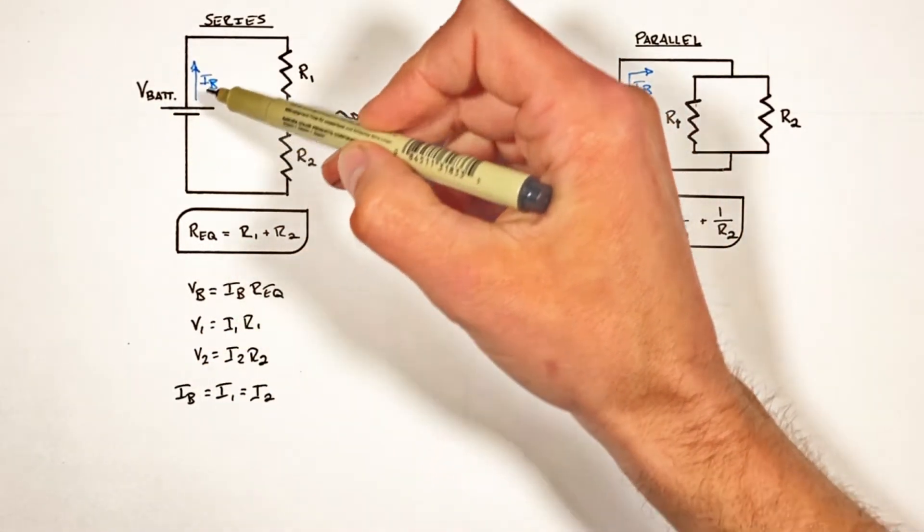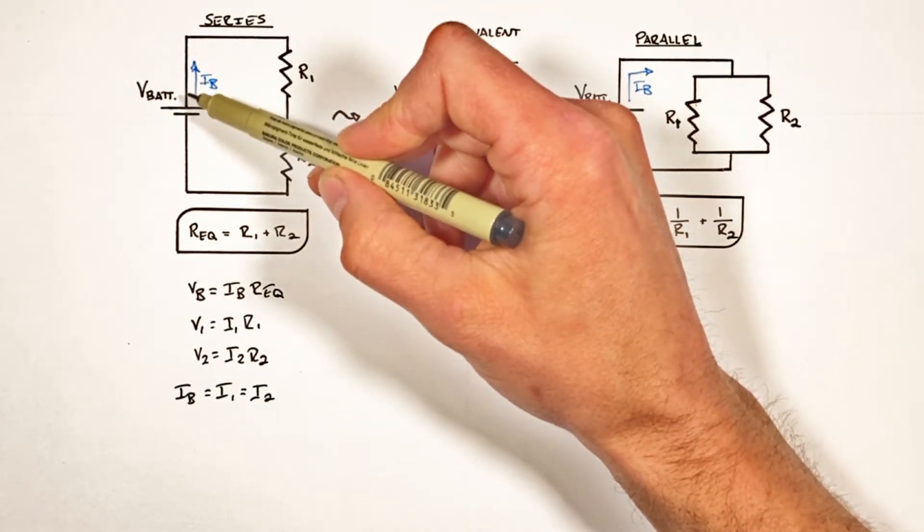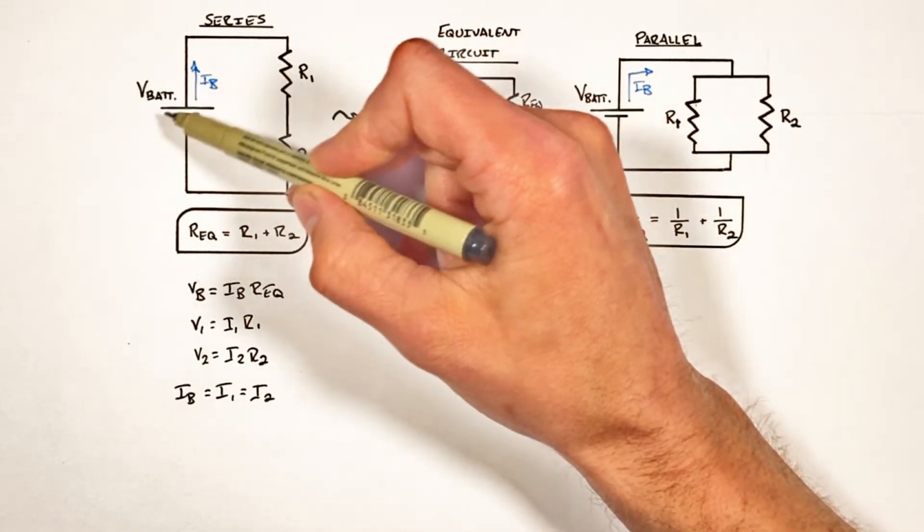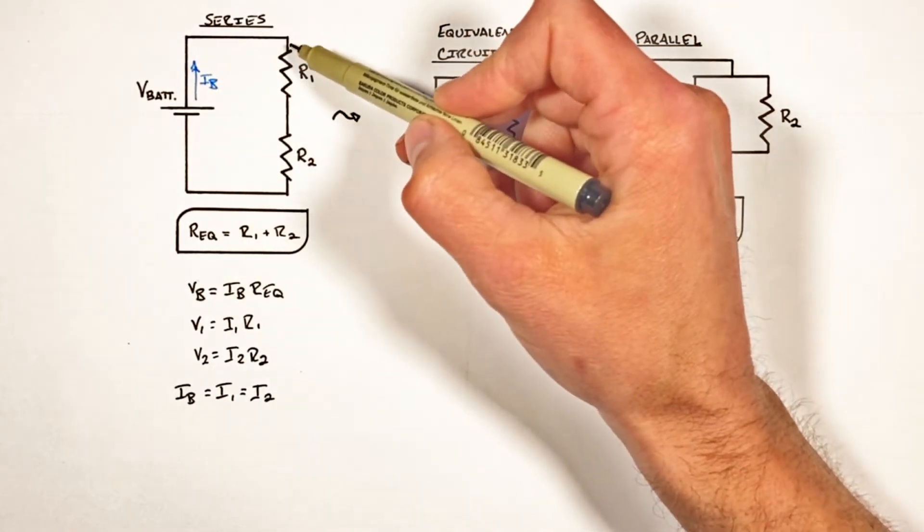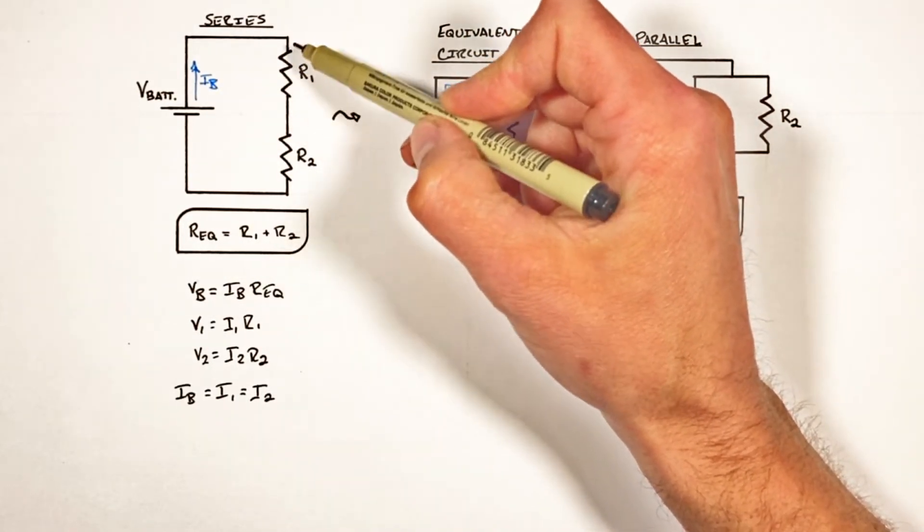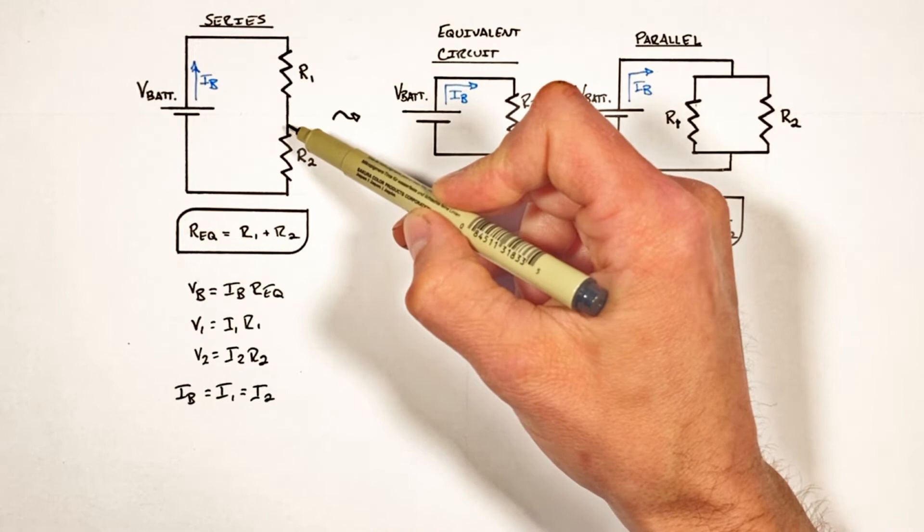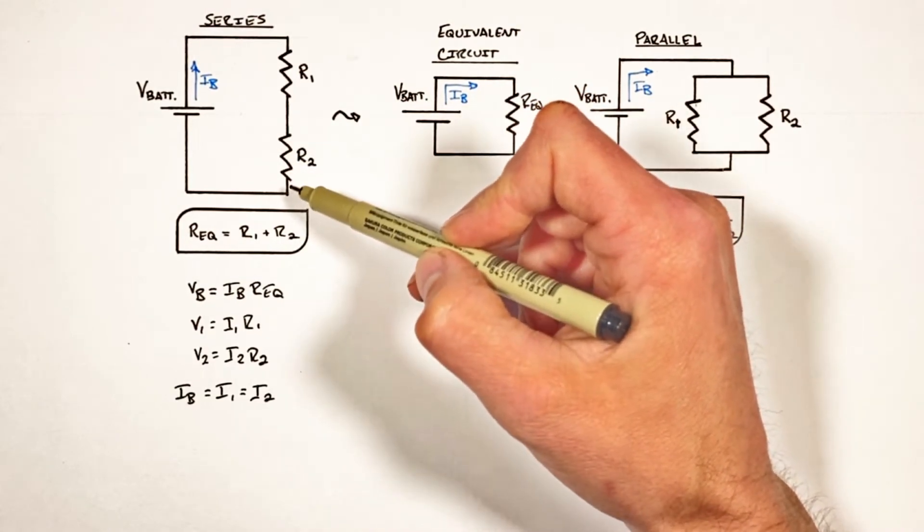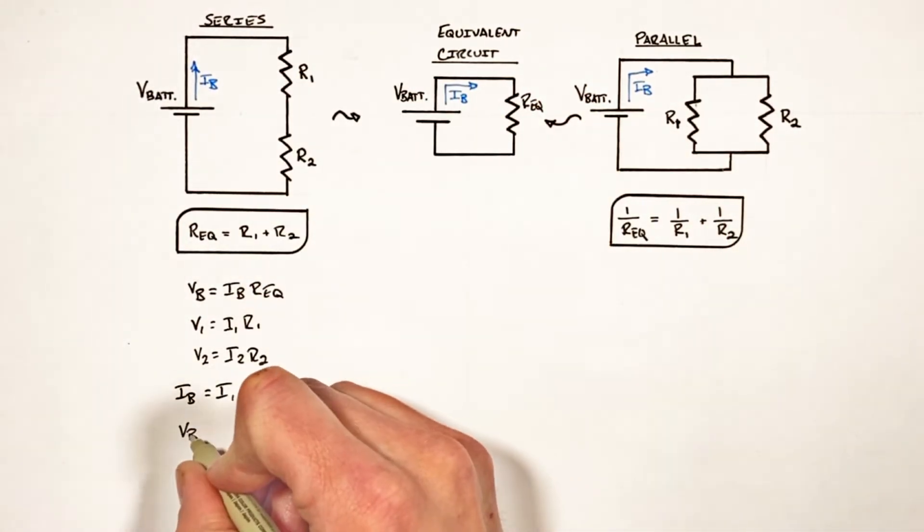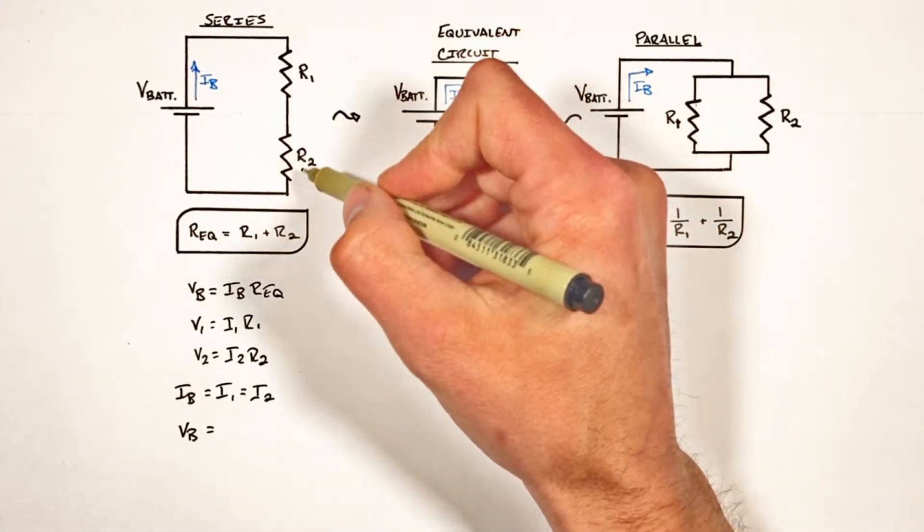You'll notice any charge which leaves the battery has a certain amount of potential given by the voltage of the battery. Some of that potential or voltage is used up across this resistor and the rest is used up across this resistor. Ultimately what that means is the voltage of the battery is equal to the sum of the two voltages used up across these resistors.